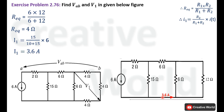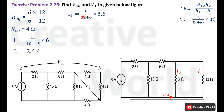The current through this branch is 3.6 Ampere. We apply the current divider rule again to find the current through the 12 Ohm branch, labeled I1. The equation is: I1 equals R2 divided by (R1 plus R2) multiplied by I_total. R2 is the opposite branch resistance of 6 Ohm, R1 is 12 Ohm, and I_total is 3.6 Ampere. So I1 equals 6 multiplied by 3.6 divided by (12 plus 6), which gives 1.2 Ampere.